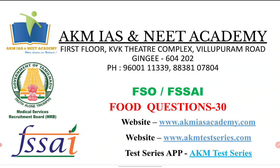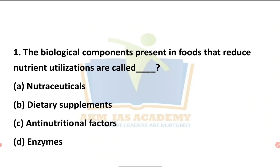The first question: the biological component present in food that reduces nutrient utilization is called what? In the food, there is a biological component present related to nutrient utilization. Options are: nutraceuticals, dietary supplements, anti-nutrition factors, and enzymes.